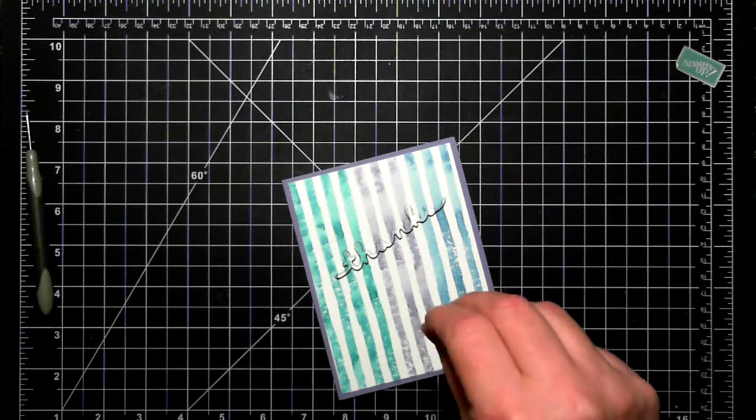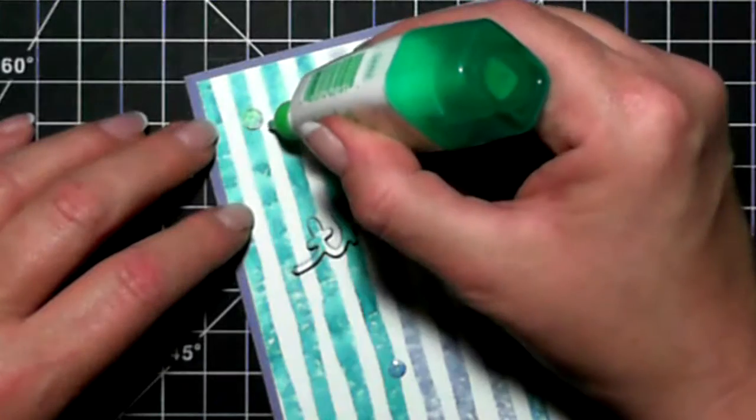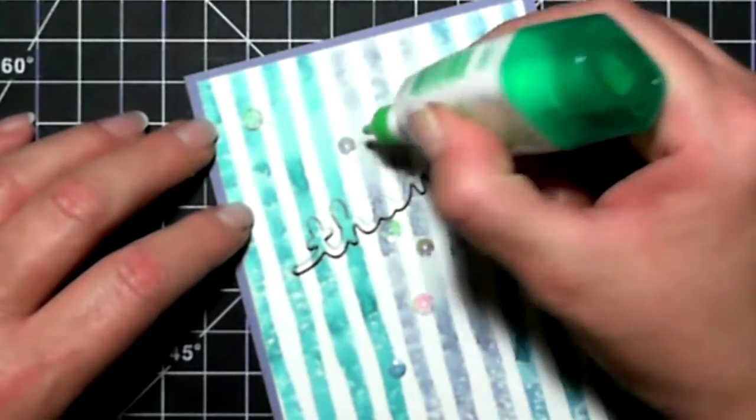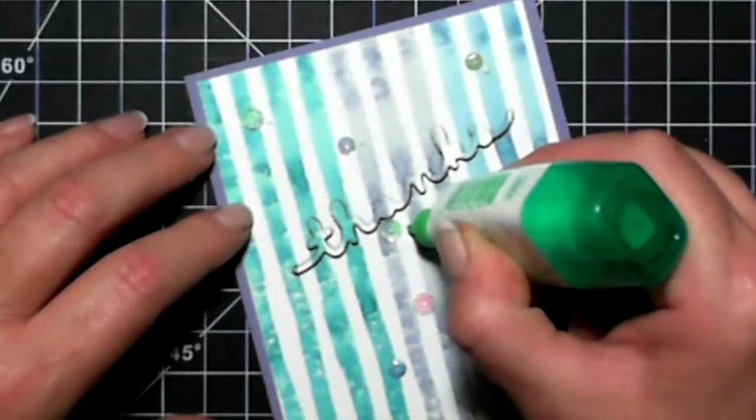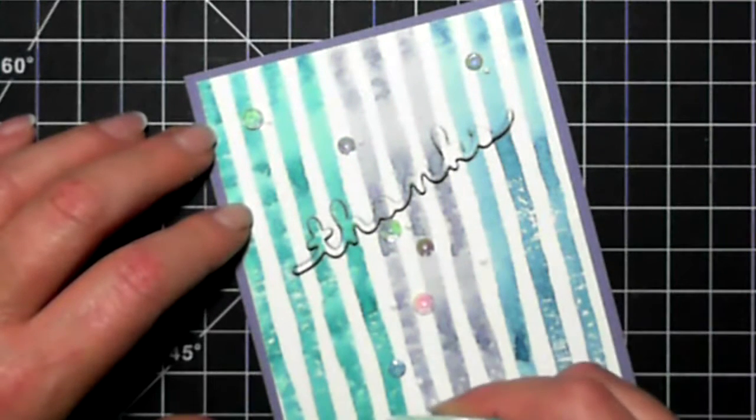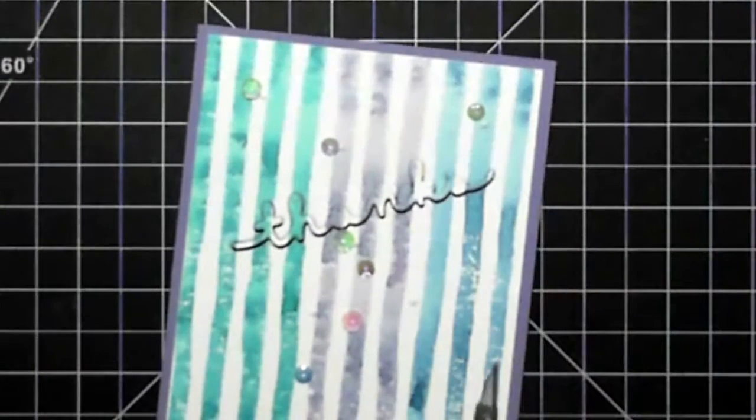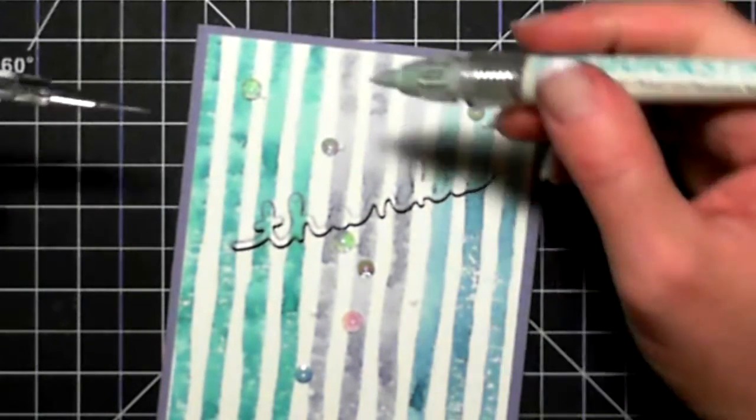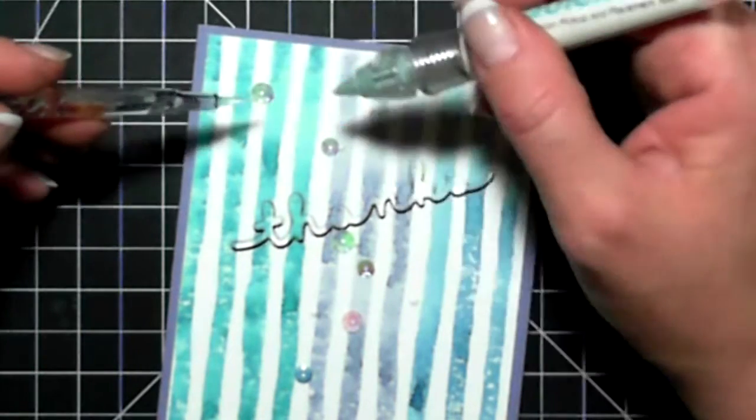Here's some really fancy sequins that I picked up from the Watercolor Wishes card kit. This was a little bit that I had left over, so I'm just putting a little bit of Tombow on the card itself, and that's how I put random sequins on. I just sort of dump them, and then with my quick sticks tool I'm picking up and using the chopstick part to hold the sequin down.